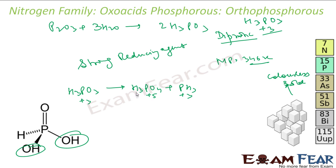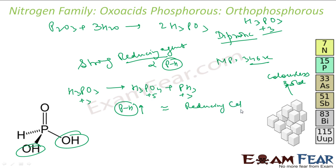The reducing capacity of oxo acids directly depends on the number of P-H bonds. More P-H bonds means greater reducing capacity. The P-H bond is non-ionizable — it doesn't break into H⁺ — so it doesn't contribute to acidity, but it makes the acid a more powerful reducing agent.